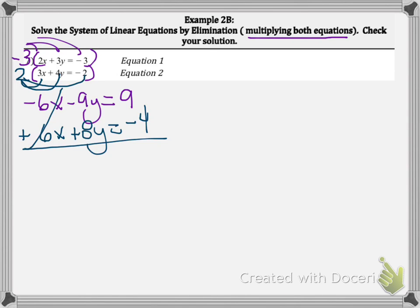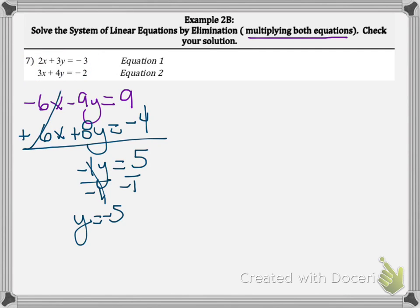We have negative 9y plus 8y, that equals negative 1y equals 5. The y has to be positive, so we divide by negative 1, therefore our y equals negative 5. Now that we've done that, let's clean this up and substitute into one of the equations so we can solve for the other variable.